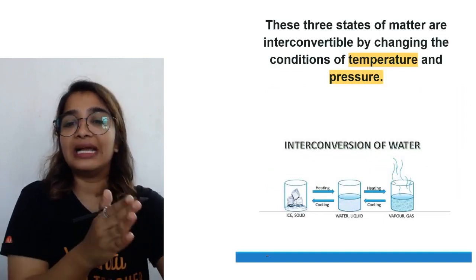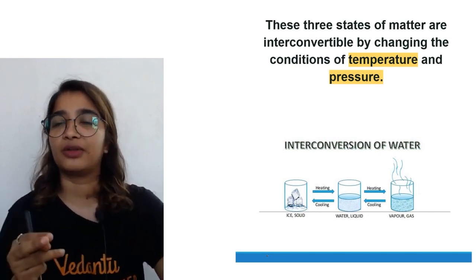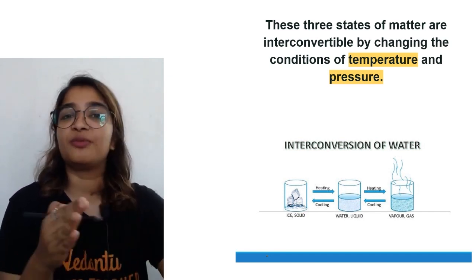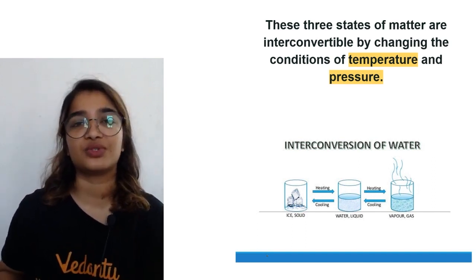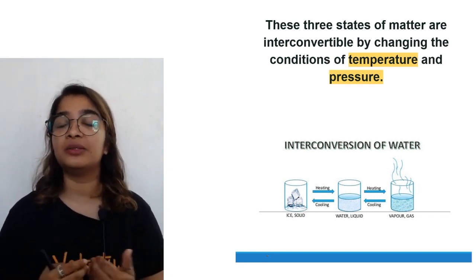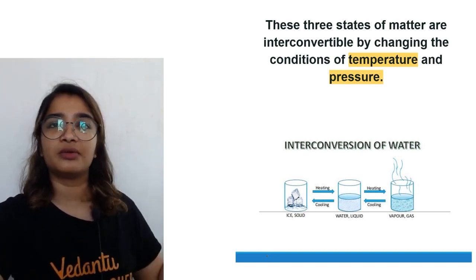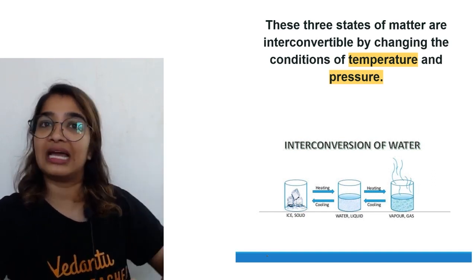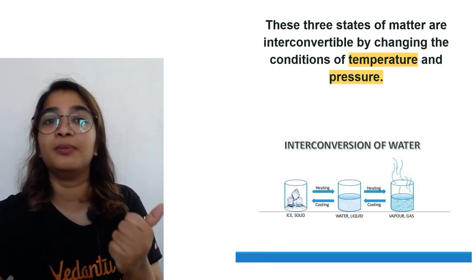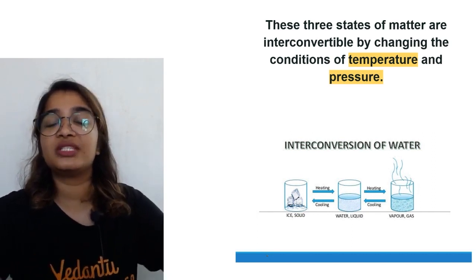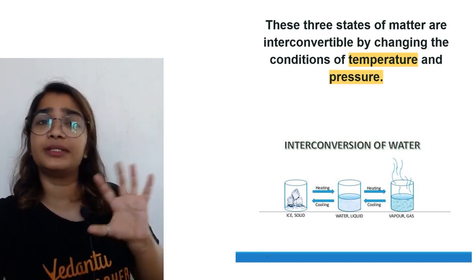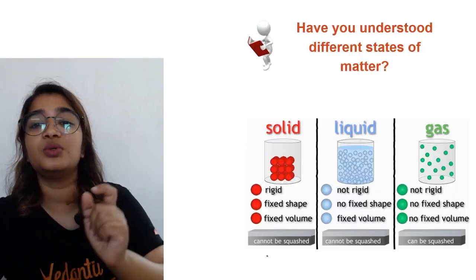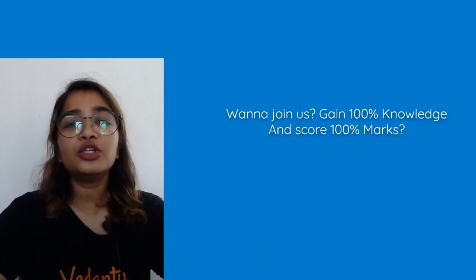I'll keep it very brief and crisp so that new students watching can understand the differences in the properties of states of matter. These three states of matter are interconvertible by changing temperature and pressure. For example, when you take ice cubes out of the refrigerator, they start melting because of the temperature difference between the refrigerator and the surroundings. Due to the increase in temperature, there is a change in state from solid to liquid. If you continue heating water, once the temperature reaches 100°C, it becomes constant and the water gets converted into vapors.